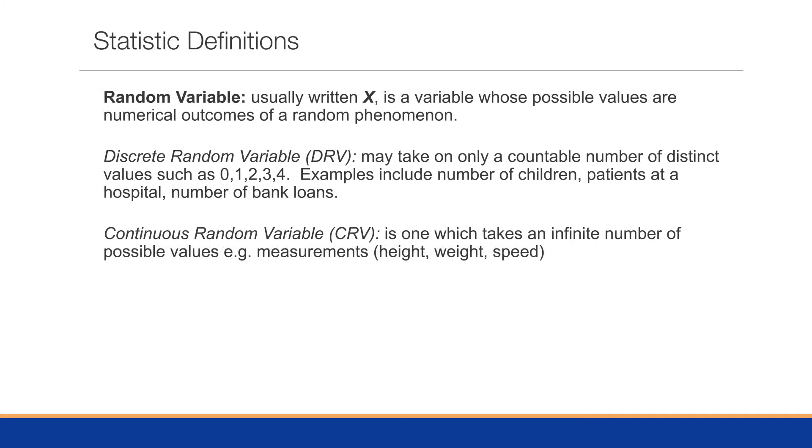A random variable, usually written as capital X, is a variable whose possible values are numerical outcomes of some random phenomena. So it would be grade point average, or grades on a test, or even whether someone votes for one particular party or another. This would be a numerical outcome of a random phenomena.